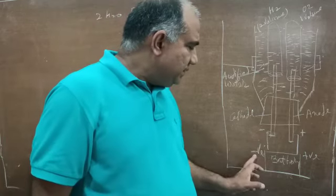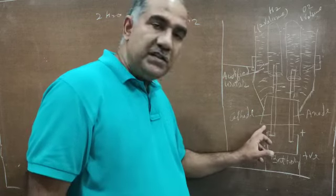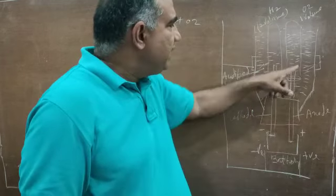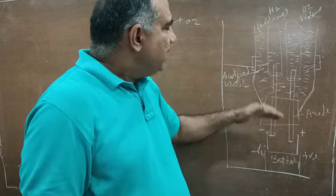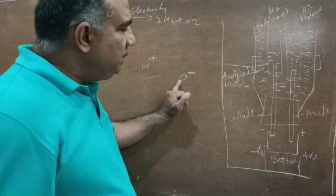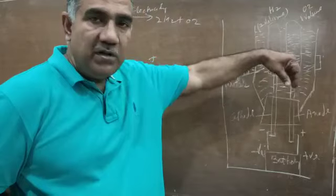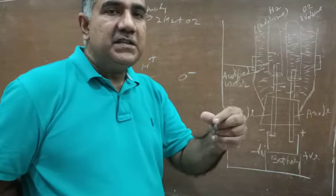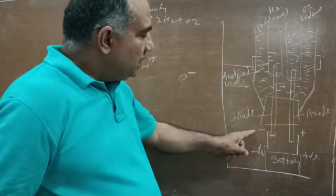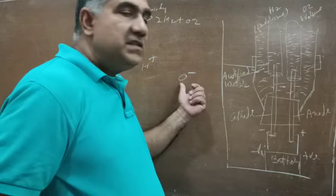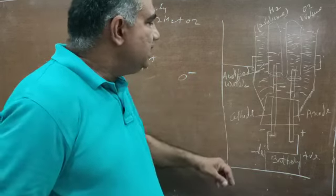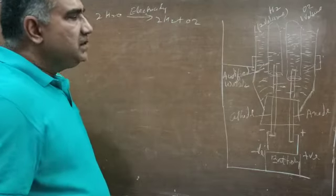We have a battery with a positive and negative terminal. The negative terminal is connected to one electrode called the cathode, and the positive electrode is called the anode. Inverted tubes filled with water are placed over the electrodes. Hydrogen is electropositive so it is attracted to the negative electrode — the cathode. Oxygen is electronegative so it goes to the positive electrode — the anode.